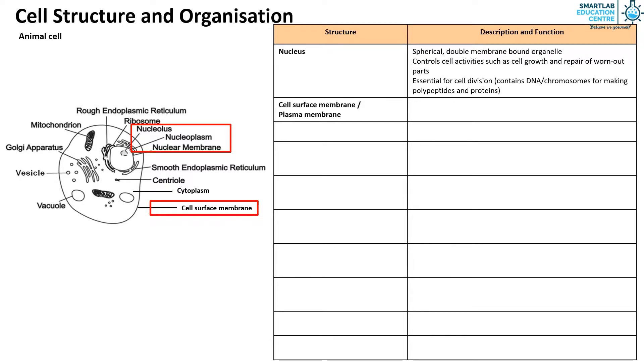The cell surface membrane or plasma membrane is a partially permeable phospholipid bilayer. It controls the movement of substances in and out of the cell. The cytoplasm is the site of most biochemical reactions.